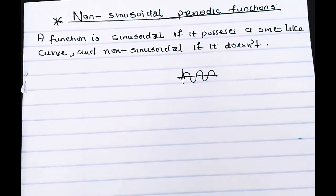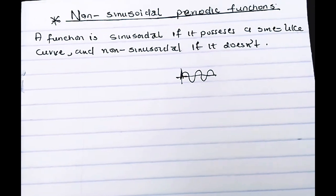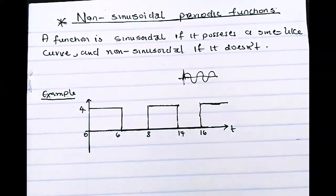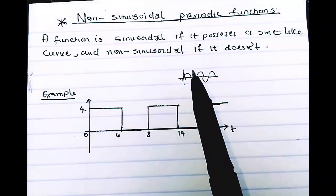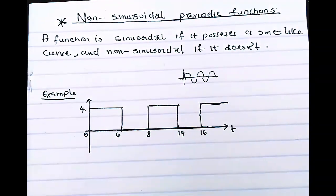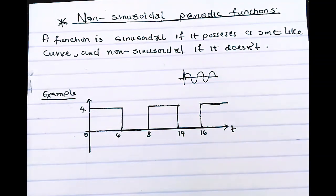Now let's take an example so you understand what I mean. Looking at this example of a non-sinusoidal curve graph — this is what I call a non-sinusoidal curve graph. It's not like our normal sine wave graphs. Here we are having a square-shaped graph.